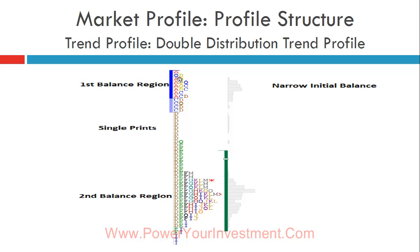Looking at a double distribution profile example: the market opens, rotates first in the lower area, then a single print occurs, then it rotates again in the upper area — giving two balance regions with a single print between them. The initial balance is relatively narrow. The gray area shown is the extension of the initial balance (approximately 150%). If the price starts to trade within that single print after reaching the upper balance area, you should recognize that something has changed and the likelihood of prices rising further has increased.